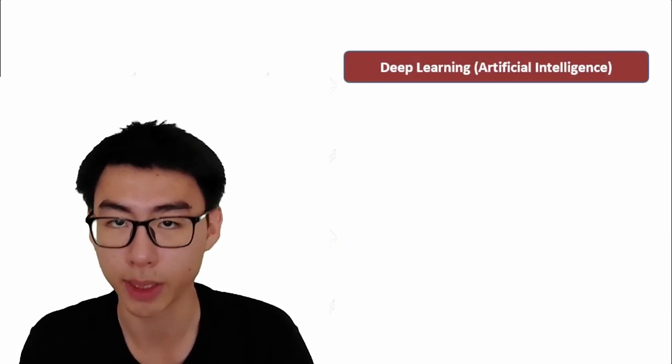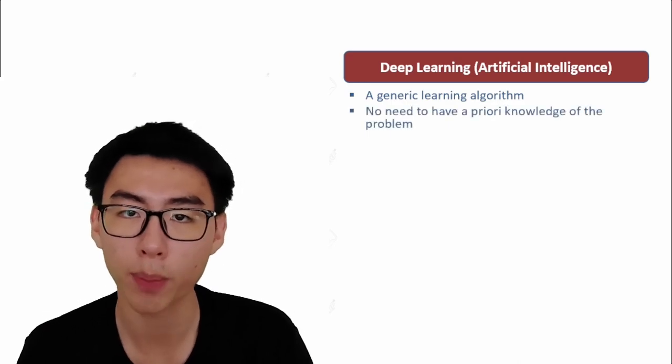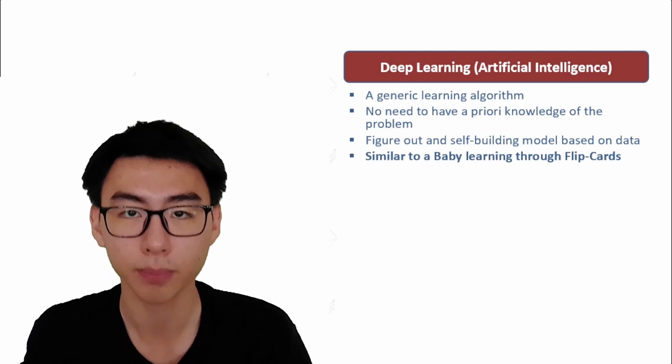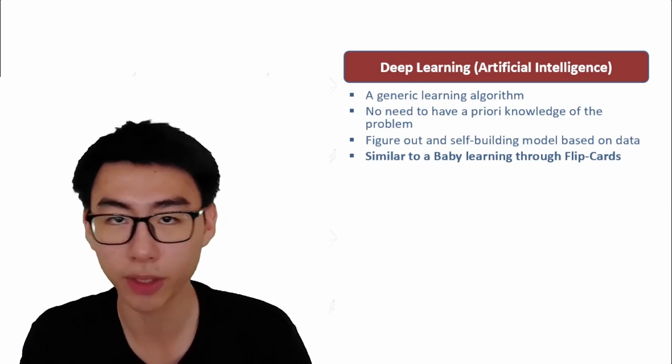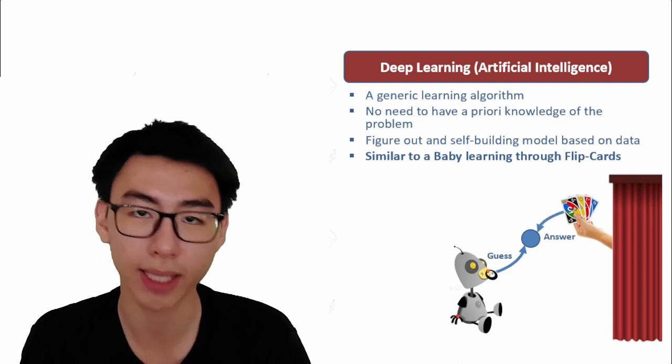In deep learning models, it is a different approach. It is a generic learning algorithm that does not require prior knowledge. It learns and builds a model based on its given data. Like how a baby learns using flip cards, the AI makes a guess and the flip cards verify whether the guess is correct or not.